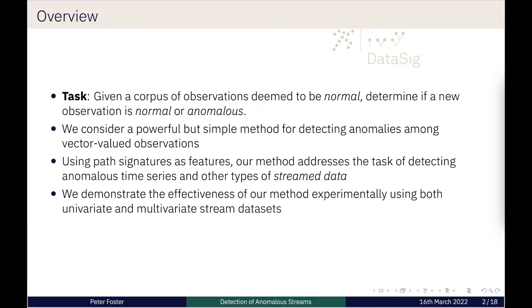This is a common machine learning problem. To this end, we propose a simple but powerful method for detecting anomalies when our objects of interest are vector-valued observations. There's also the more particular task of detecting anomalies where our objects of interest are streams, and this is where path signatures are a very powerful method of representing streams. Therefore we can use path signatures as feature representations for anomaly detection.